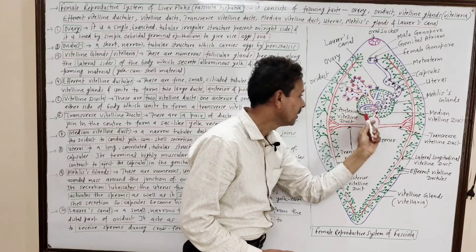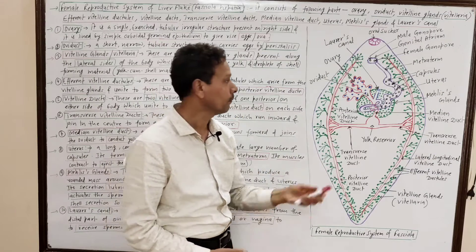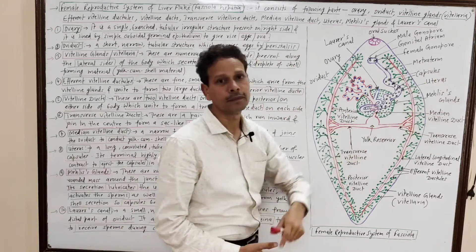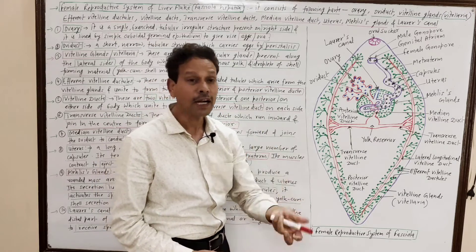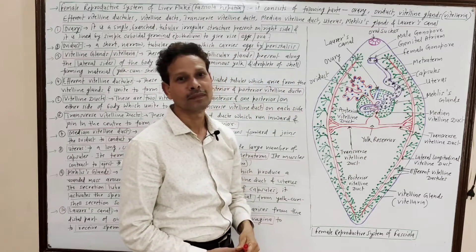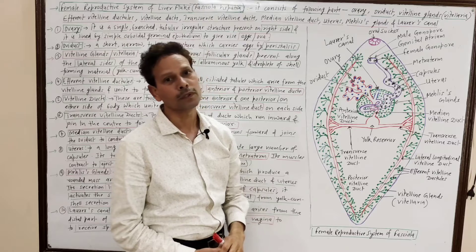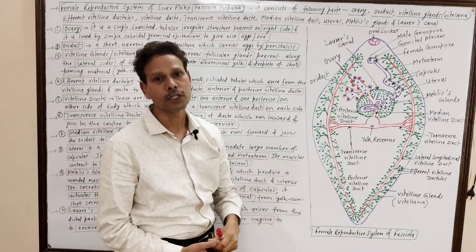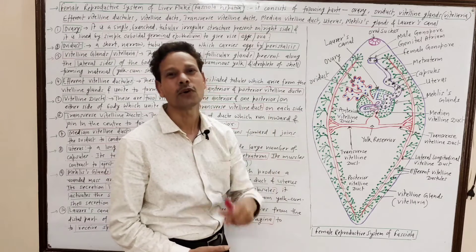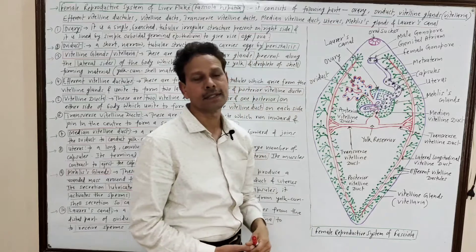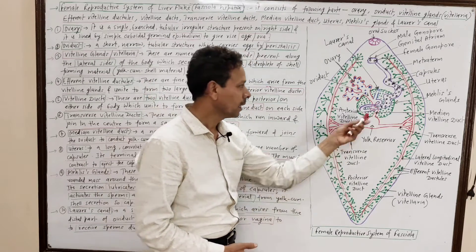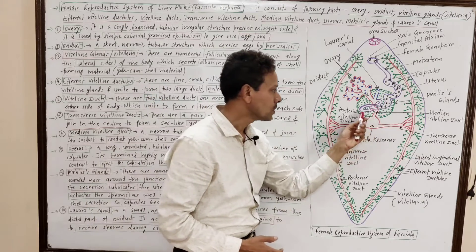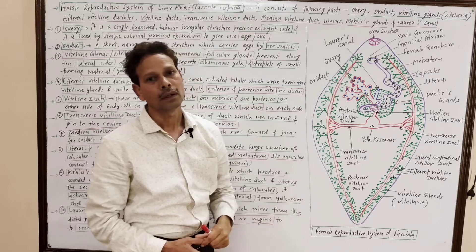In the center, there is a large globular gland formed by the fusion of numerous unicellular follicular glands — the Mehlis glands. The secretion of Mehlis glands lubricates the uterus for easy passage of capsules. It also activates the sperm to increase sperm motility. Dear students, note down: the secretion of these Mehlis glands also involves separation of yolk and shell-forming material, which hardens the shell of the capsules.